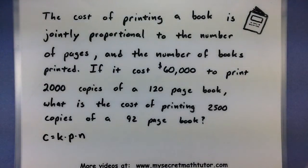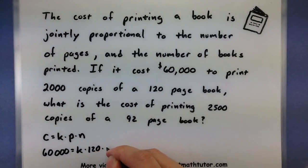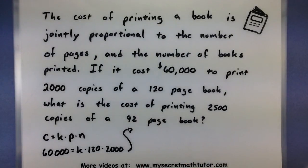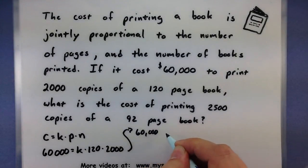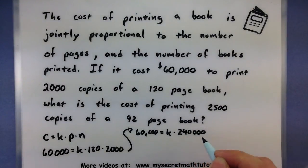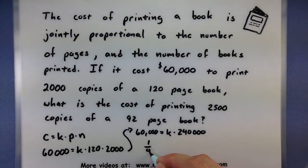If it costs $60,000 to print 2,000 copies of a 120 page book, what is the cost of printing 2,500 copies of a 92 page book? So this one we know the cost, we can put that in. 2,000 copies of a 120 page book. We can multiply these two values over here. So we'll end up with 60,000 equals k times 240,000. Now we can divide both sides by that 240,000. This will give us one fourth is equal to k.